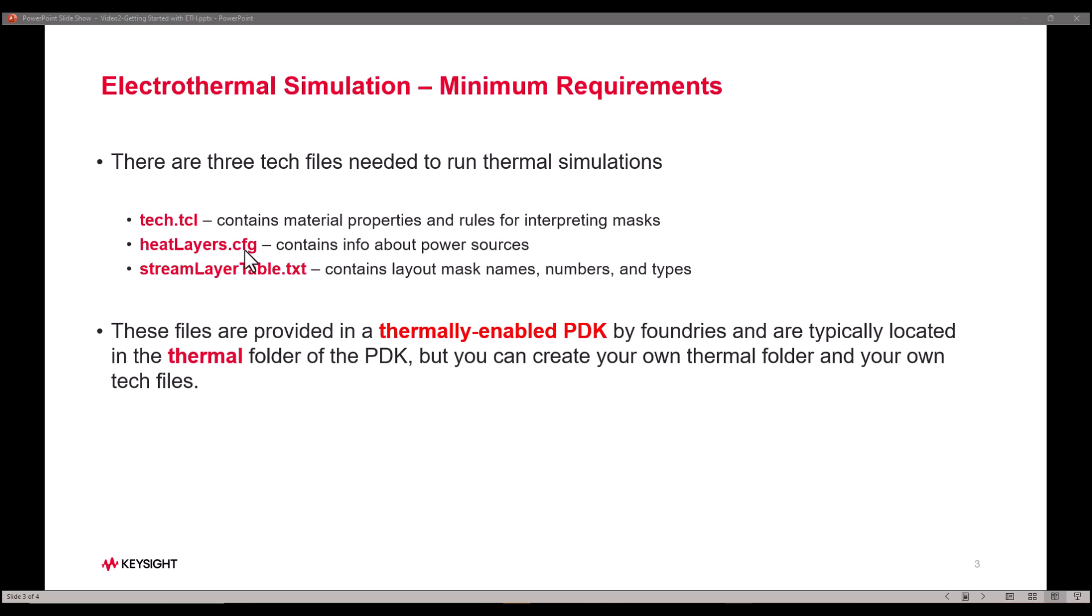Heatlayers.cfg contains the information about the power sources. A stream layer table text file contains the layout mask names, numbers and type etc. Typically these three files are provided by foundries in a thermally enabled PDK and these can be found under thermal folder of the PDK.